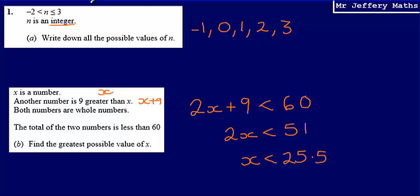However, we're not quite finished there because we're told that both numbers are whole numbers. So find the greatest possible value of x. x has to be a whole number. So the greatest possible value of x would be 25. So x is less than 25.5, the greatest whole number that it could be would be 25.